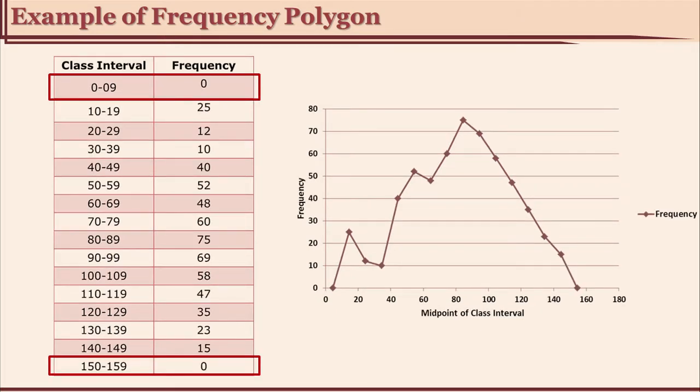Now this figure is a closed figure known as a polygon because it has many sides. This also covers the area of your distribution, but if you compare it with histogram it does not cover exactly the same area. The frequency polygon is showing you the area covered because all the frequencies are here.